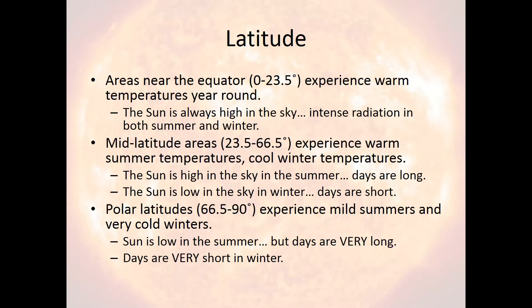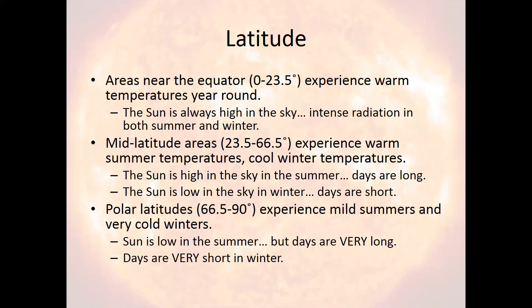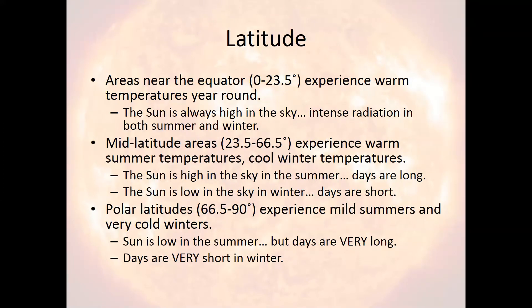So latitude. If you live near the equator in the tropical regions, you experience warm temperatures year-round — usually very warm, temperatures in the high 80s, low 90s even — and very little change from season to season. This is because the sun is always high in the sky, so there's not really a big variation from season to season.